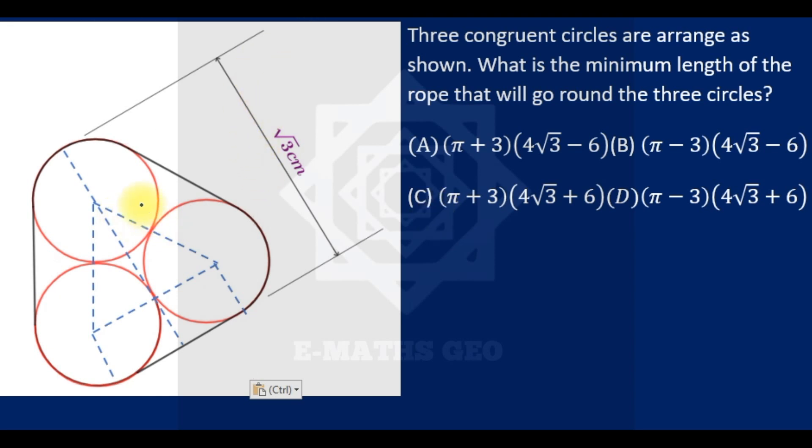So you can see that is the radius of this circle. Remember that congruent circles have common radius. And these are the centers of this circle. From here to here is the same as this.